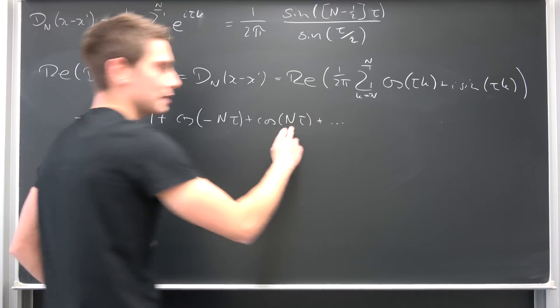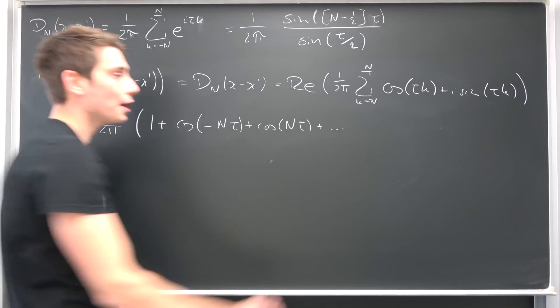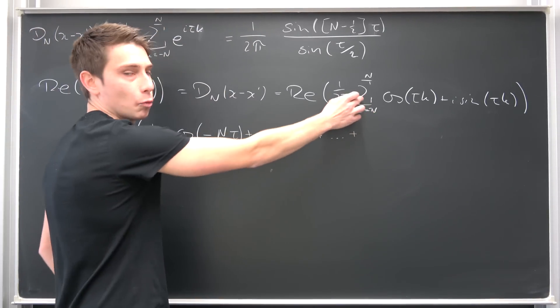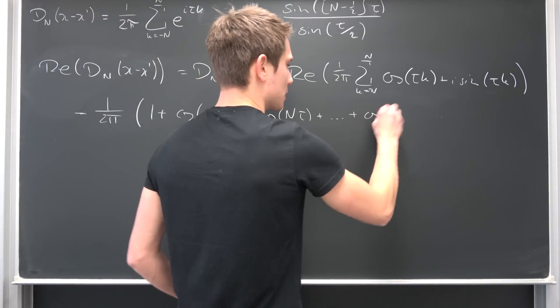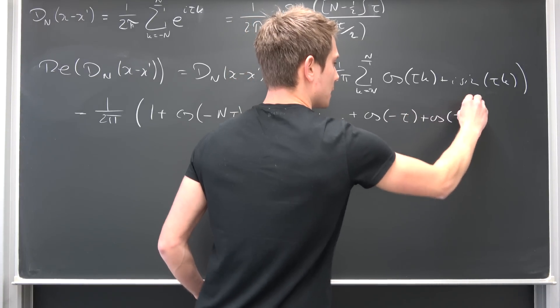Plus dot dot dot, N minus 1, N minus 2, negative N minus 1, negative N minus 2, and so on, up until 1 and negative 1. So this is going to give us cosine of negative tau plus the cosine of tau.